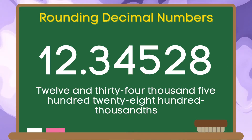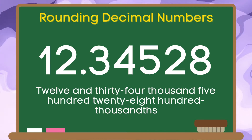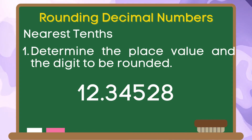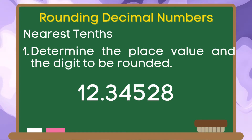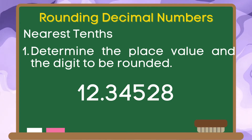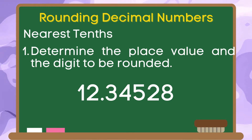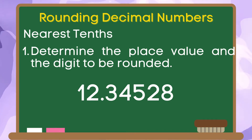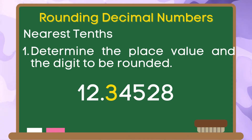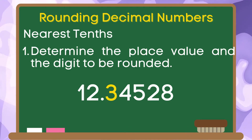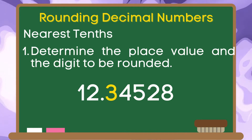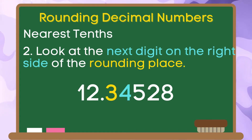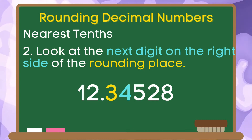Therefore, the rounded number of 3 and 157 thousandths is 3 and 16 hundredths. Let us have the example 12 and 34 thousand 528 hundred-thousandths. Step 1: determine the place value and the digit to be rounded. We are asked to round the given digit to the nearest tenths. Therefore, we are going to look for the digit that is in the tenths place value. The digit at the tenths place value is 3. Step 2: look at the next digit on the right side of the rounding place. The number at the right side of 3 is 4.